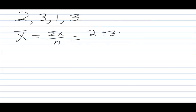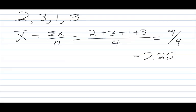so we take 2 plus 3 plus 1 plus 3, and there are four of those data points. This gives us 9 over 4, which is 2.25. So that is our mean.